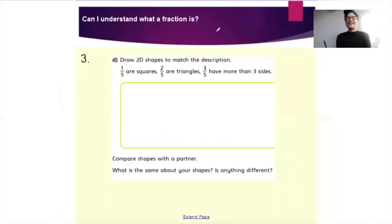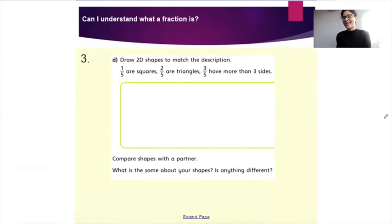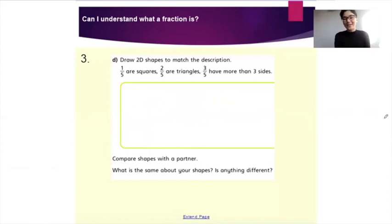And lastly, you have to draw 2D shapes to match the description: one out of five are squares, two out of five are triangles, three out of five have more than three sides. Have a go at answering that question, then put your findings and drawings onto Tapestry for me to see. That is all for your maths lesson for today, Williams class. Stay safe, take care, and I'll see you very soon. Bye!